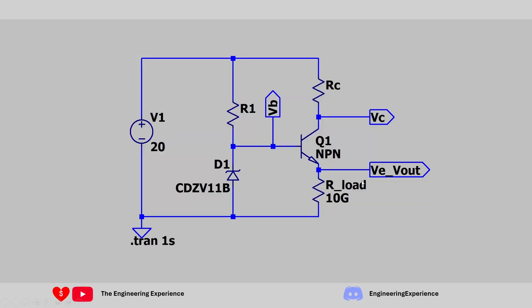First, let's look at the circuit. From last time we had a Zener regulator, which was basically a resistor with a Zener diode. For this question we have added an emitter follower. You can see the regulated Zener voltage here, then we have an emitter follower. The load resistor is down here and we have this RC resistor over here.